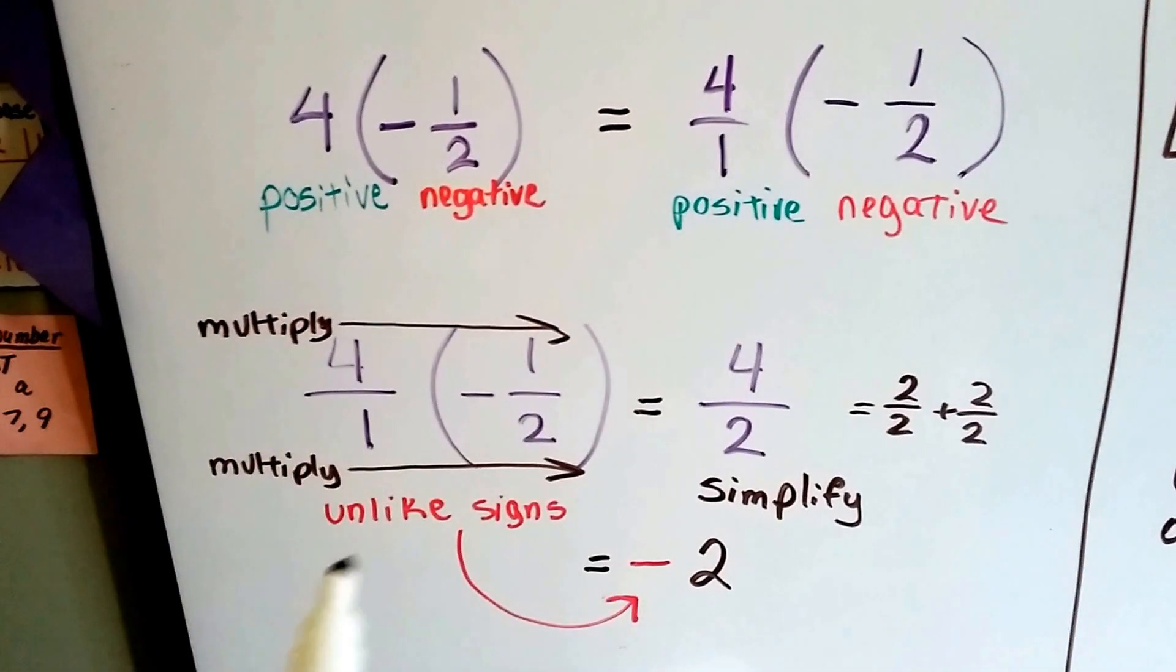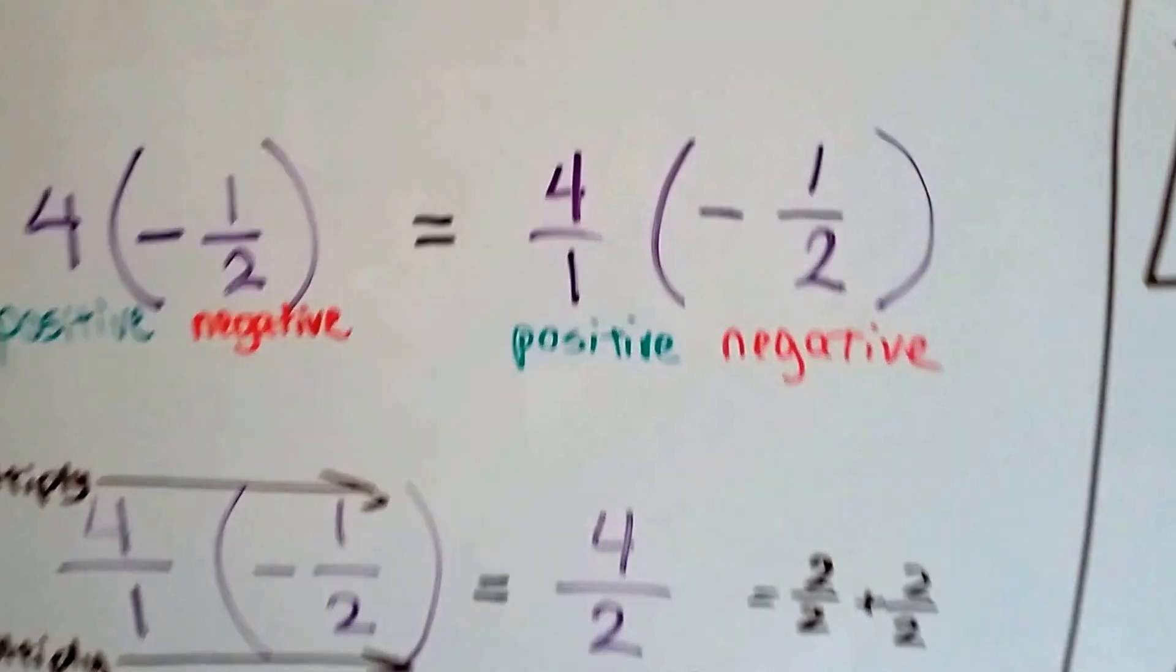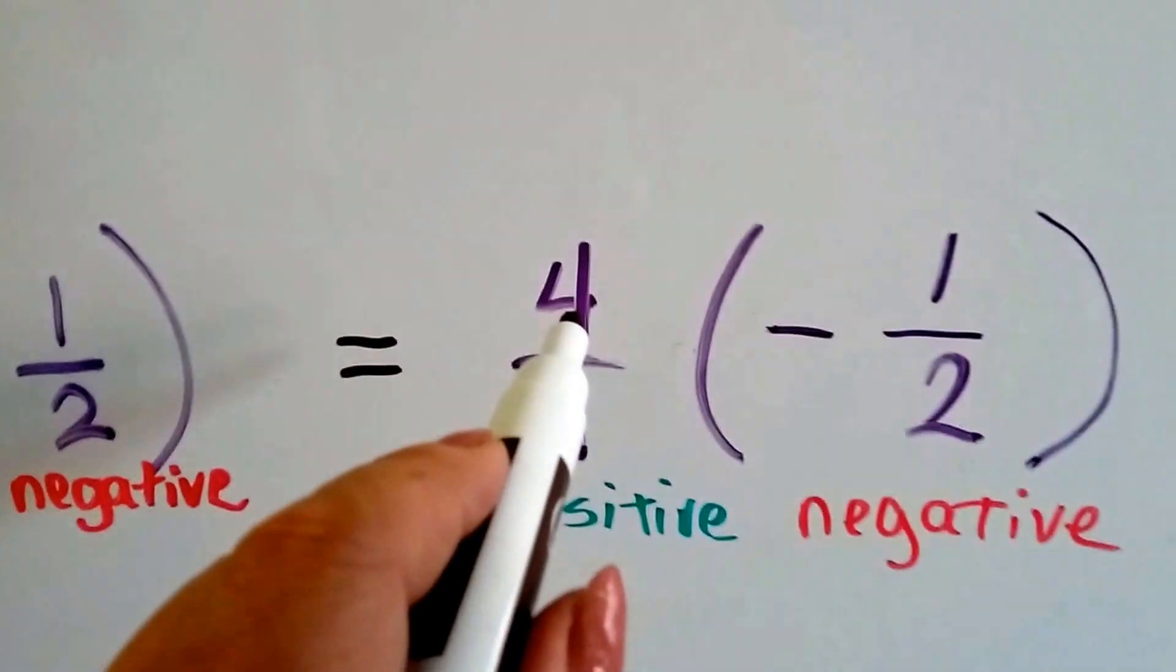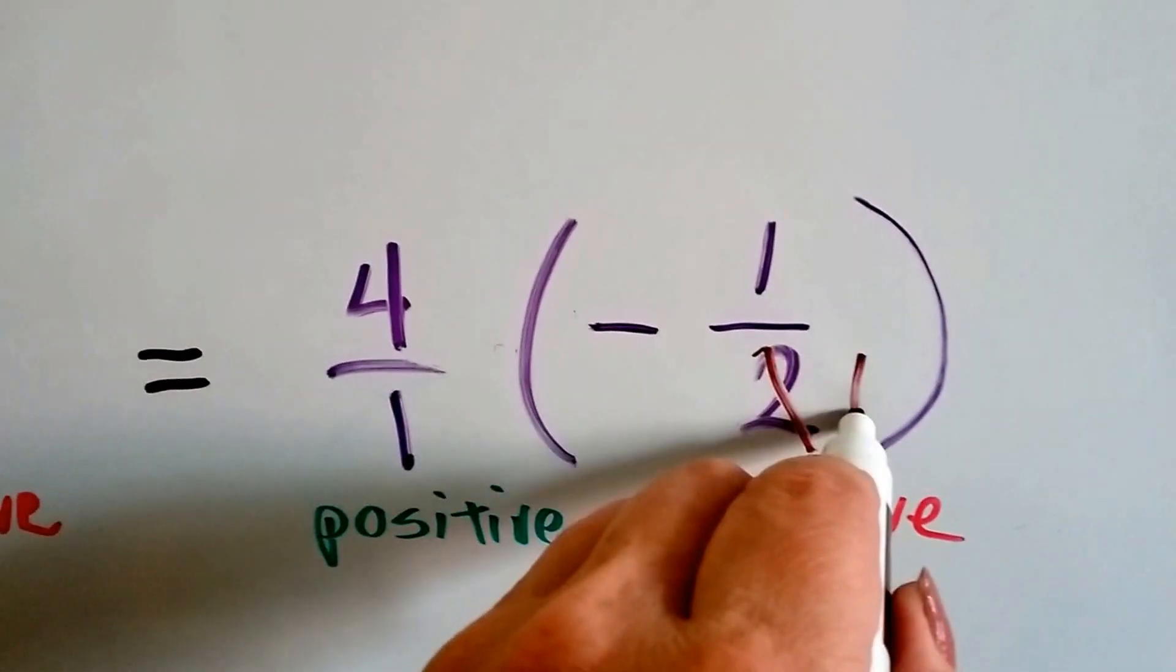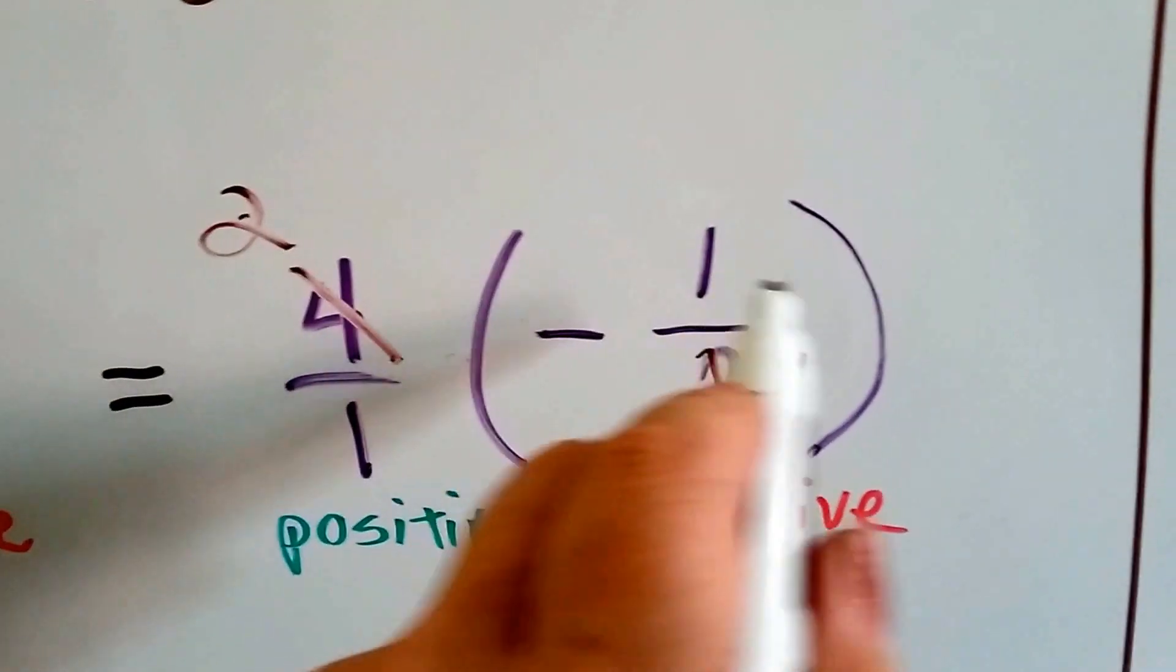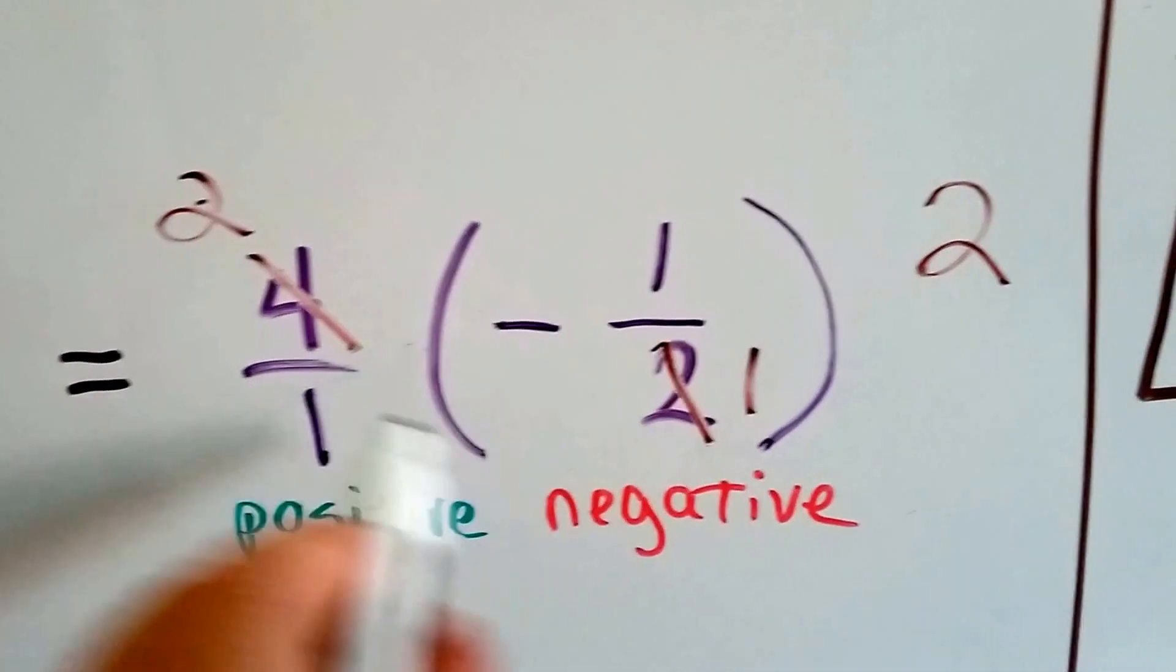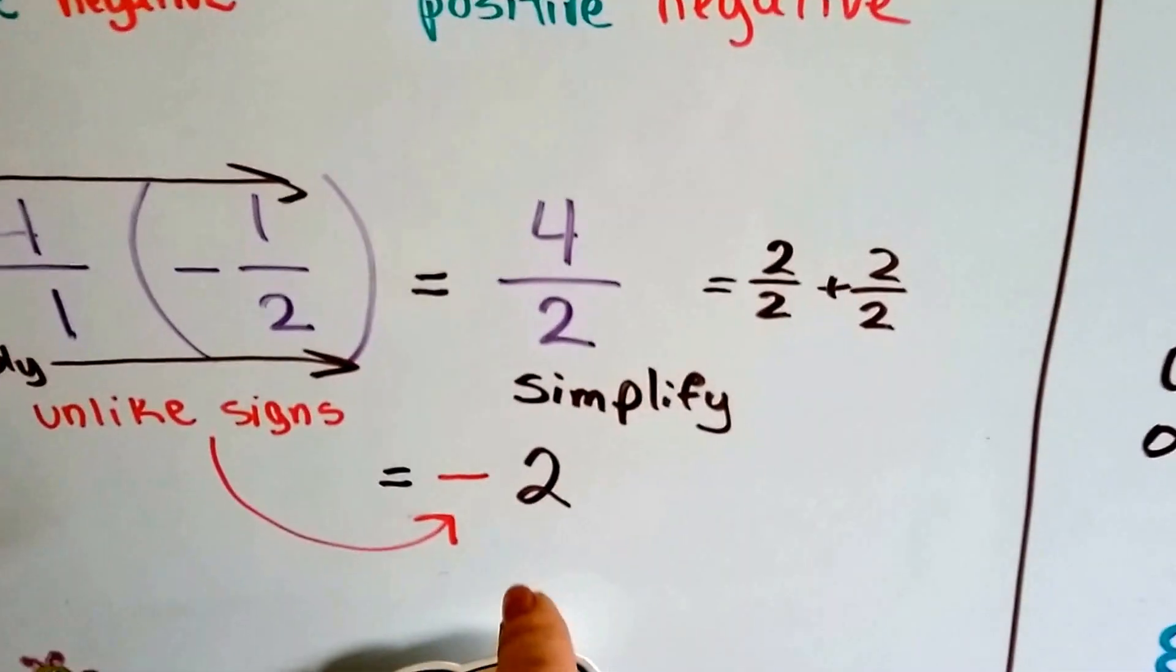And they have unlike signs, so the answer's going to be negative. Now, another way we could have done this is because 2 is a factor of 4, right? It's a divisor. We could have said 2 goes into 4 2 times, and 2 times 1 is 2, and 1 times 1 is 1. That gives us 2 over 1, which is 2.